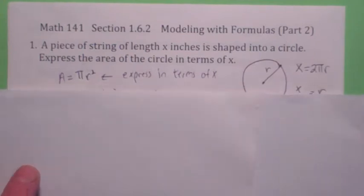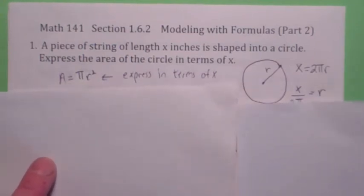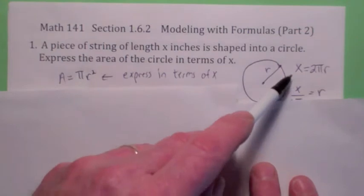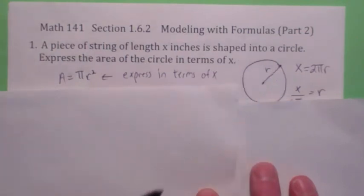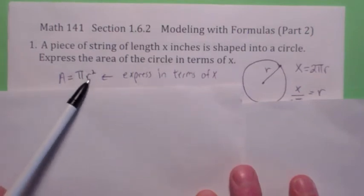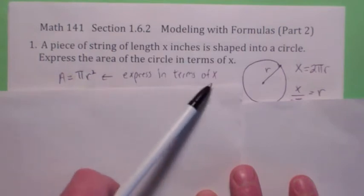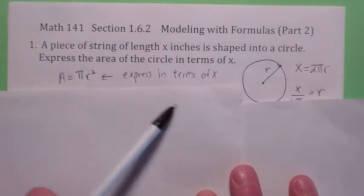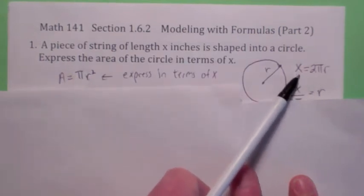It turns out, isn't x the circumference of the circle? I mean, x is the length of string, so 2 pi r equals x. So that's the trick on a lot of these. If you want to express this in terms of x, you have to find a relationship between r and x because you want to get rid of r. The relationship between r and x is that x equals 2 pi r.